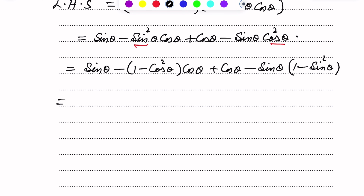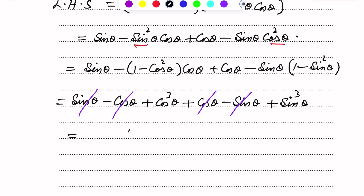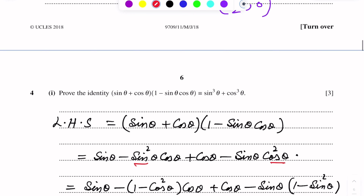Expanding the brackets: sin theta minus cos theta plus cos cubed theta, plus cos theta minus sin theta plus sin cubed theta. The terms minus sin theta and plus sin theta cancel out, and minus cos theta and plus cos theta cancel out. So we get sin cubed theta plus cos cubed theta, which equals the right hand side. Identity part one is proved.